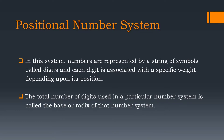The total number of digits used in a particular number system is called the base or radix. For example, if you consider the decimal number system which we generally use in our mathematics, it contains 10 digits, that is from 0 to 9. So the base of this number system is 10.